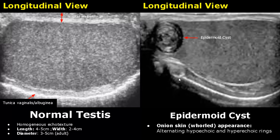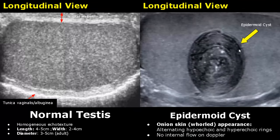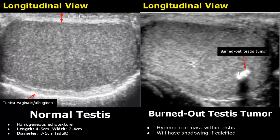An epidermoid cyst is a rare benign tumor. It has an onion skin or whorled appearance consisting of alternating hypoechoic and hyperechoic rings, and will not have any internal flow on Doppler. A burned-out testis tumor appears as a hyperechoic mass within the testis — usually it is calcified and has posterior acoustic shadowing. It is malignant.